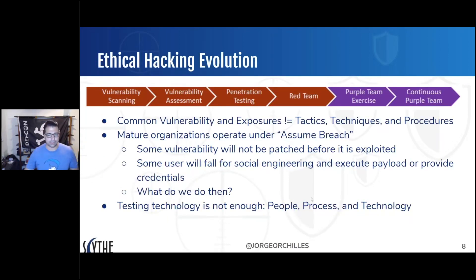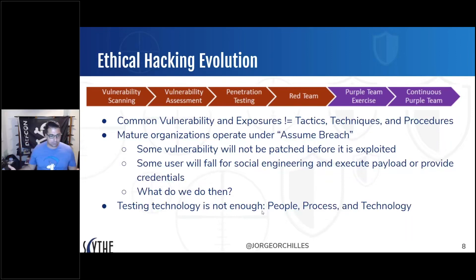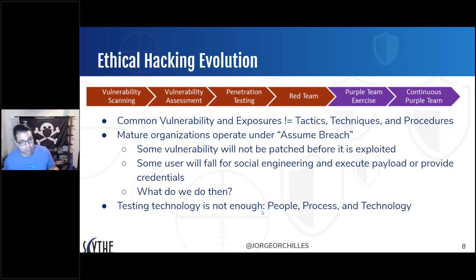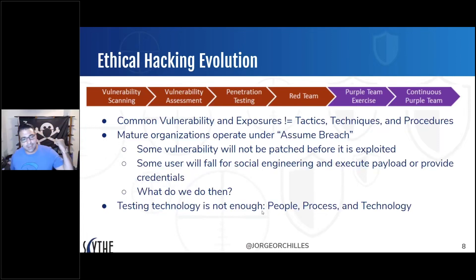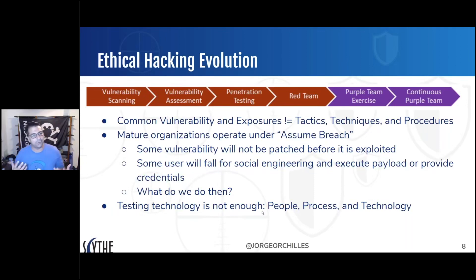Evolution of ethical hacking: most organizations started with vulnerability scanning — running a scanner against an IP or web app. You triage that in what's called vulnerability assessment. You might find something you can exploit, which is penetration testing, and you provide a priority list to senior management. That was maybe 10 years ago. Vulnerabilities are not going away — you know to expect patches on the second Tuesday of every month from Microsoft.